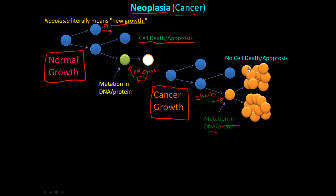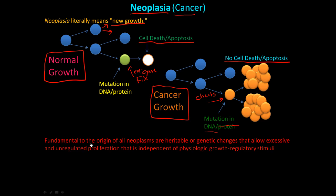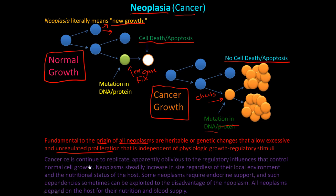Cancer cells have lost the willingness to play with others and be part of a team — they just go crazy. There's no cell death, there's no apoptosis. Fundamental to the origin of all neoplasms are heritable or genetic changes that allow excessive and unregulated proliferation that is independent of physiological growth regulatory stimuli. In cancer, that regulatory control is completely gone.